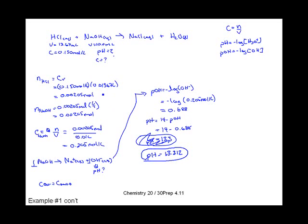That's probably the hardest our titration questions are going to get. Most of them are just going to take us down to the concentration level and we'll be able to stop there. If we are doing a pH calculation — which we should be able to do from chapter 6 — it might take a couple more steps, but usually we stop at the concentration.